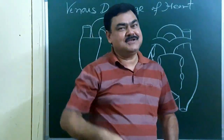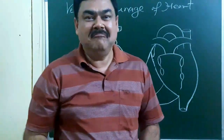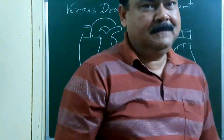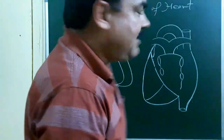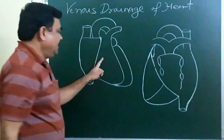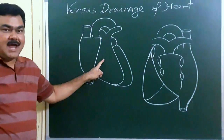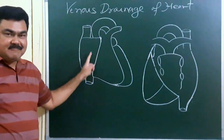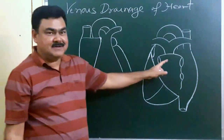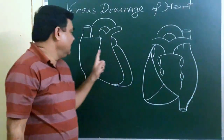Now we will discuss about the venous drainage of the heart. You can see here, this is the anterior surface of the heart. There is also the posterior surface of the heart.